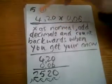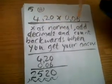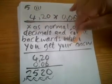Now here is a simple example like I spoke to you earlier on: 4.20 times 0.06. Now multiply as normal and add the decimals and count it backwards when you get your answer.